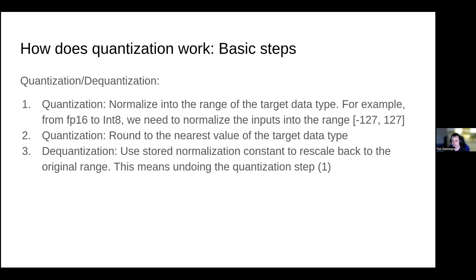Then you use the second step, rounding, to get conversion into the target data type — you round to the closest value in the target data type. And if you want to recover the original values, you do de-quantization, which is the reverse of the previous operations. So you divide by 127 and multiply by the absolute maximum value, and then you get back the original values.